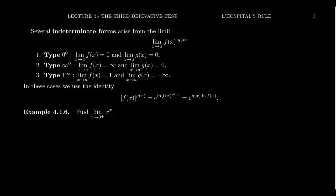As we've been discussing L'Hôpital's rule, there have been a couple of indeterminate forms that we've investigated. We've talked about 0 over 0 and infinity over infinity, where L'Hôpital's rule applies directly. We've also talked about 0 times infinity, which can be turned into one of these quotient indeterminate forms where L'Hôpital's rule applies.